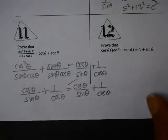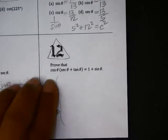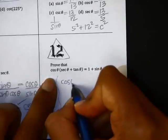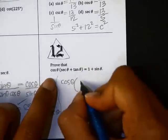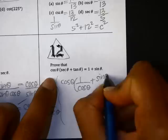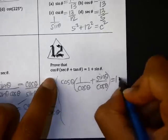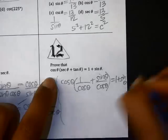On number 12, we have cosine theta times secant, which is 1 over cosine. Tangent is sine over cosine. And then we have 1 plus sine theta on the right side.